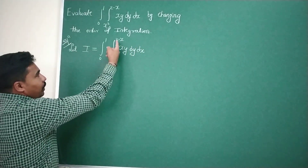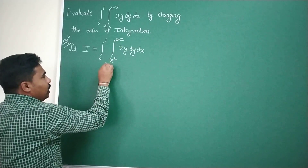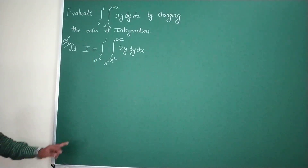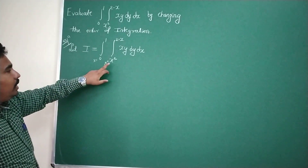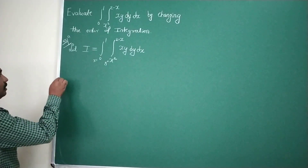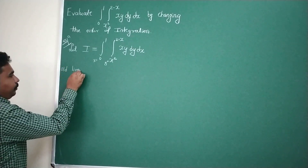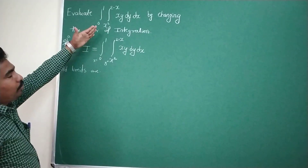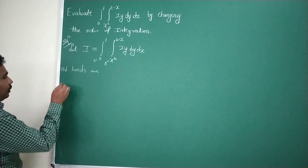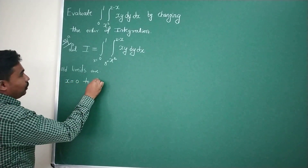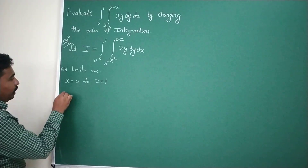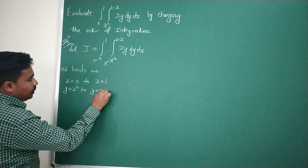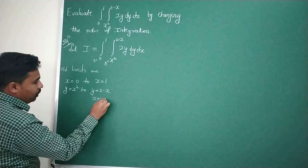Since these limits are given in terms of x, they are the y limits. Obviously the remaining limits will be the x limits. So x is varying from 0 to 1, and correspondingly y is varying from x squared to 2 minus x. Let us write the old limits — the limits given in the problem before changing the order.